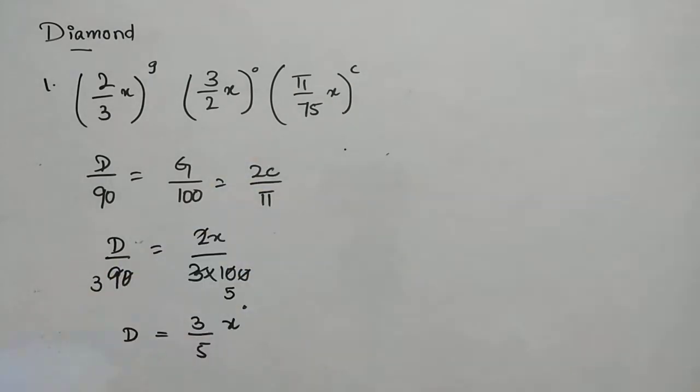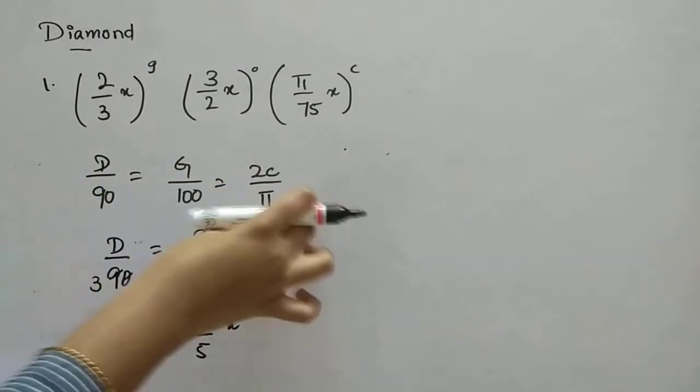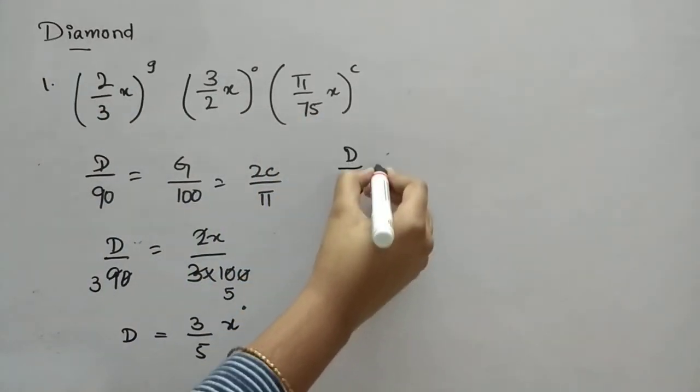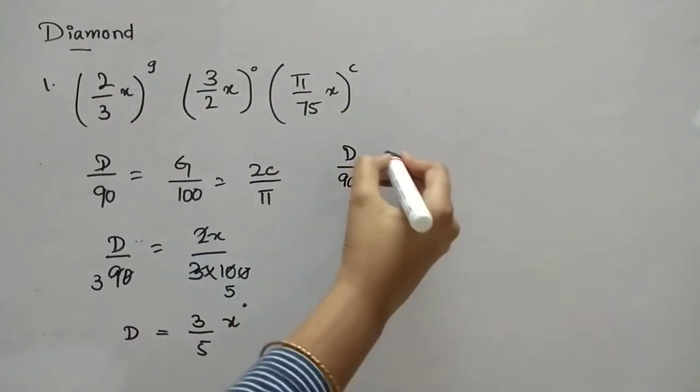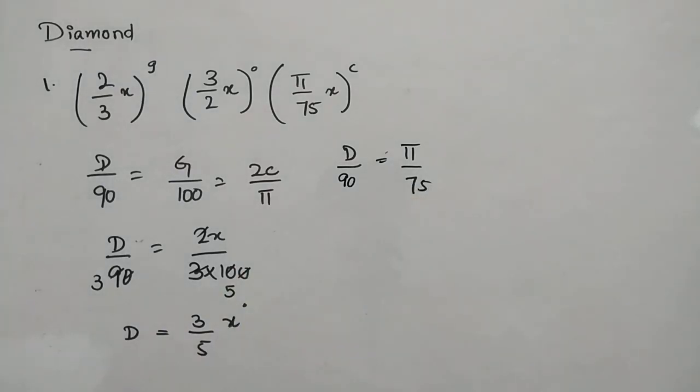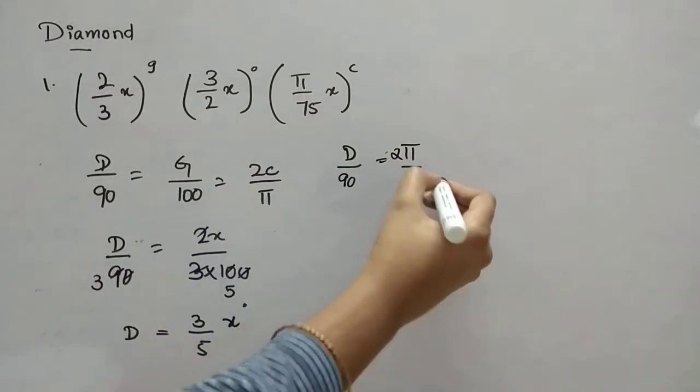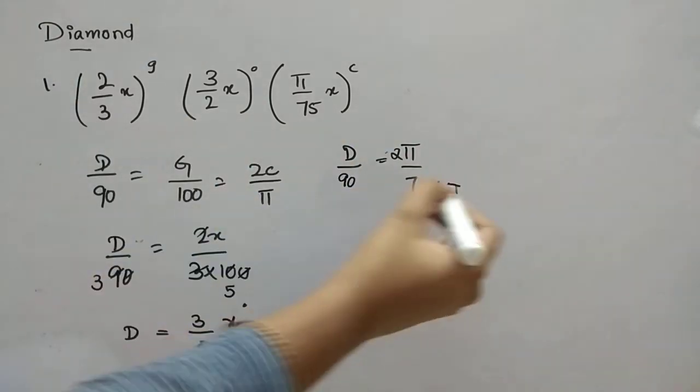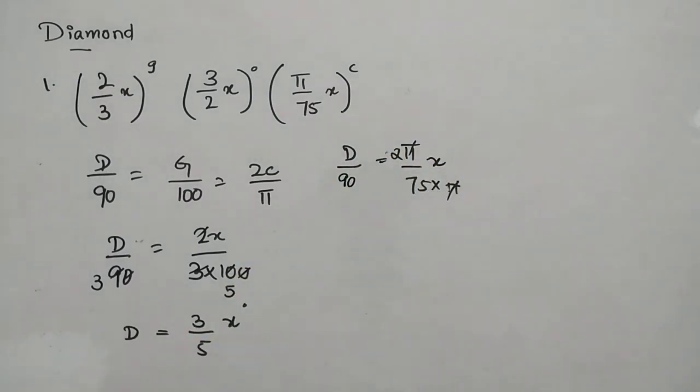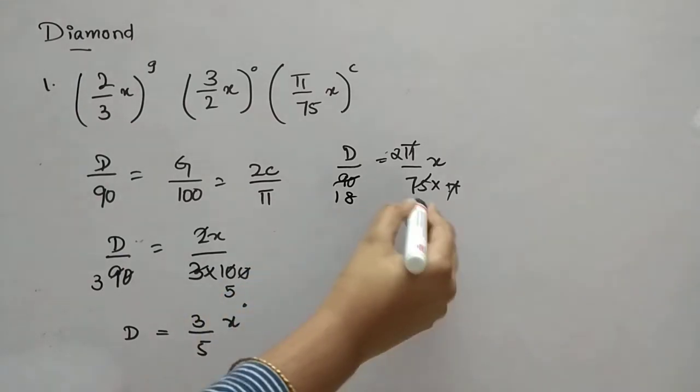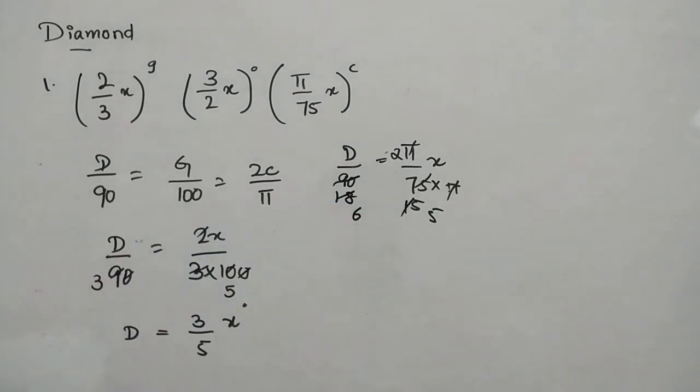Now we have to see 2 radians by pi. So d by 90 is equal to pi by 75 into 2 into x divided by pi. When you cancel, d value is 12 by 5 x degrees. So everything we found in degrees actually. This we converted to degrees.